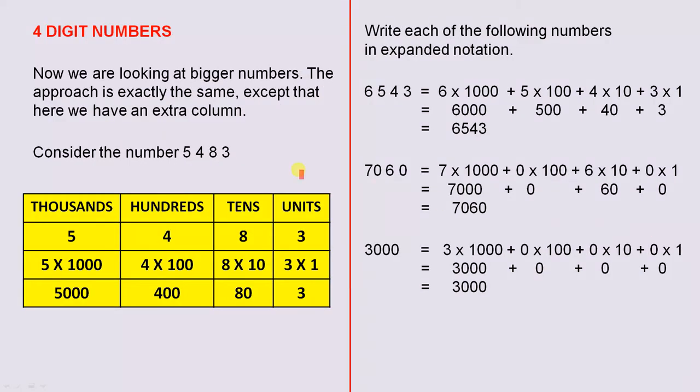Four-digit numbers. Now we are looking at bigger numbers. The approach is exactly the same, except that here we have an extra column. Consider the number 5,483. So the 3 is in the units column. The 8 is in the tens column. The 4 is in the hundreds column. And the 5 is in the thousands column.